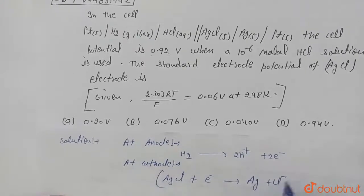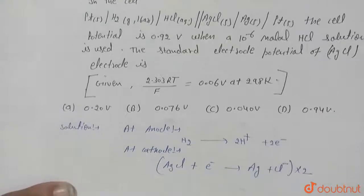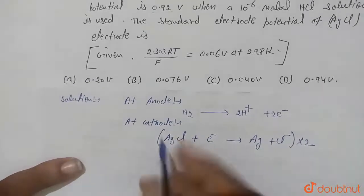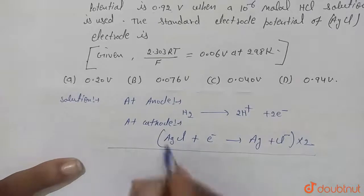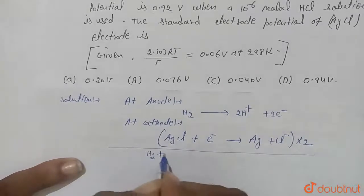When we balance this, then multiply by 2. Now we write the overall equation: H2 plus 2AgCl, multiply by 2.